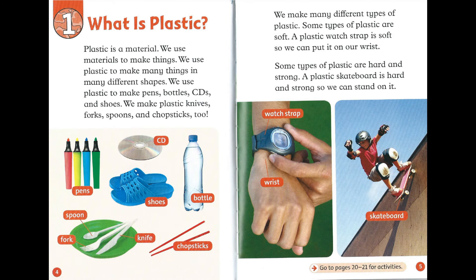Chapter 1: What is plastic? Plastic is a material. We use materials to make things. We use plastic to make many things in many different shapes.